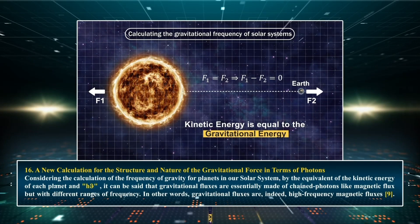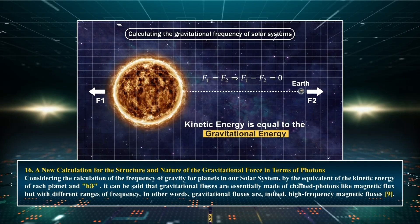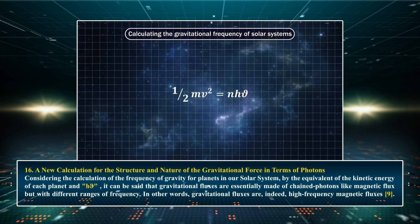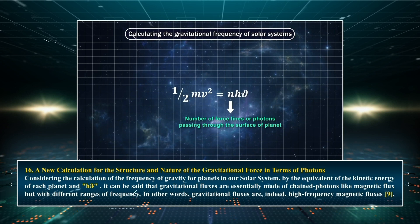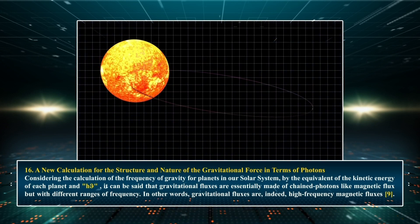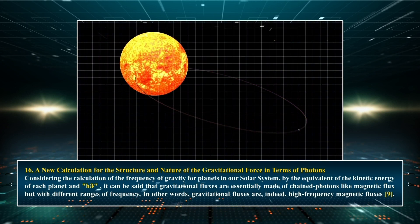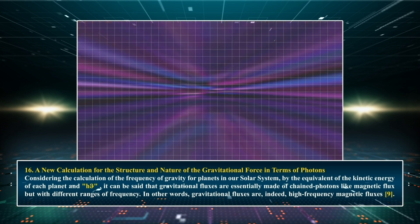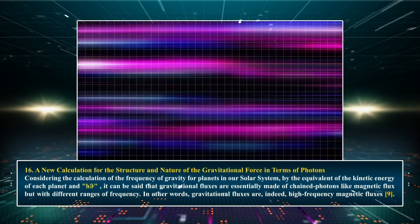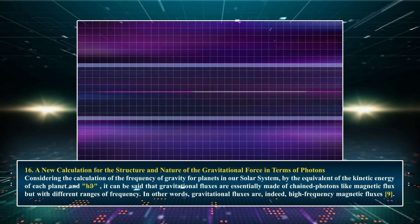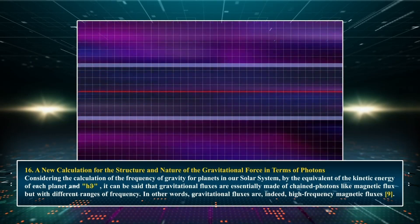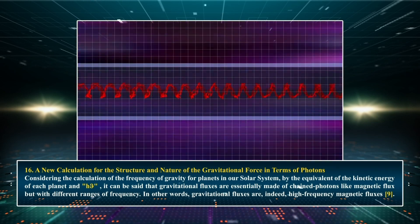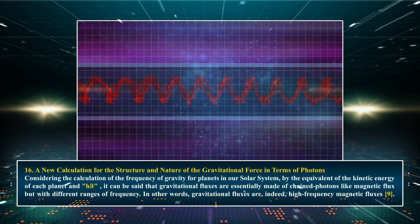Chapter 16: A new calculation for the structure and nature of the gravitational force in terms of photons. Considering the calculation of the frequency of gravity for planets in our solar system by the equivalence of the kinetic energy of each planet and h·ν, gravitational fluxes are essentially made of chained photons like magnetic flux but with different ranges of frequency. In other words, gravitational fluxes are indeed high-frequency magnetic fluxes.